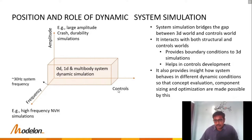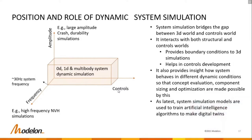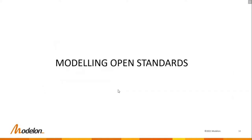System simulation also enables concept evaluation, component sizing, and optimization. As a later step, system simulation models are used to train artificial intelligence algorithms to make digital twins. System simulation models are much faster than three-dimensional FEA and CFD simulations, which take a longer time to compute.